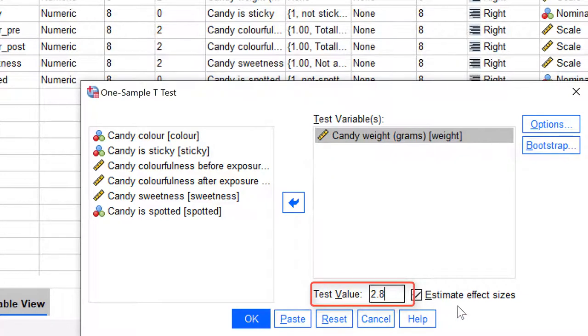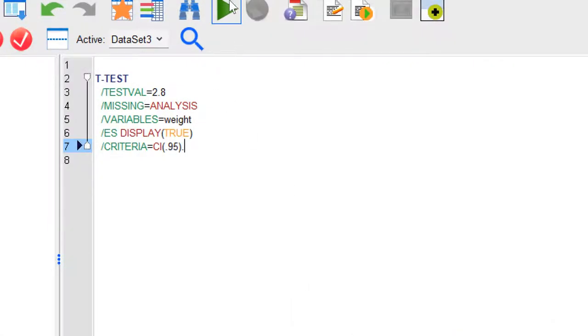If the Estimate Effect Sizes box is checked, SPSS will calculate Cohen's d. Let us paste and run the command and inspect the output.